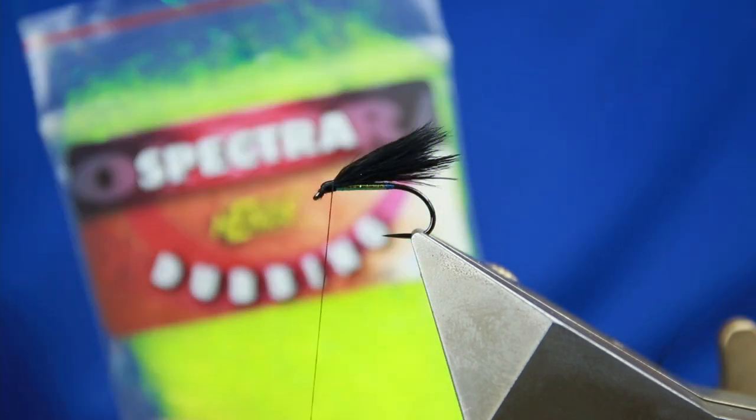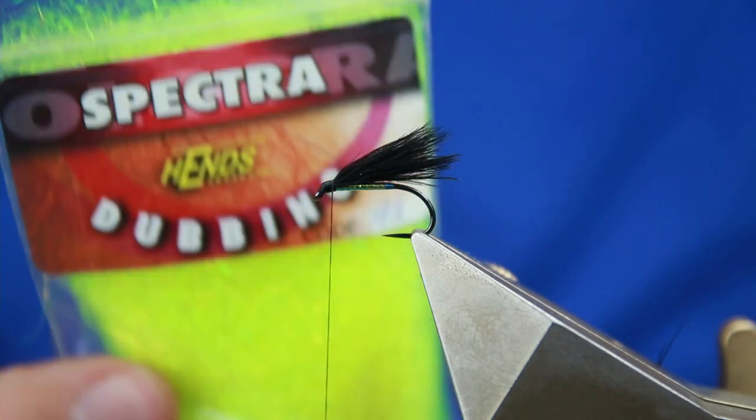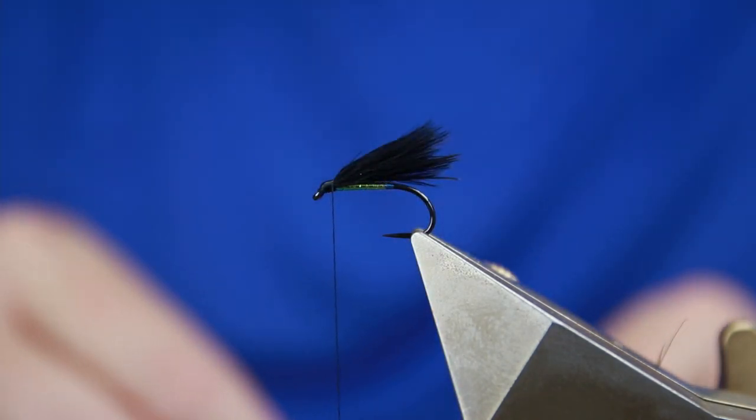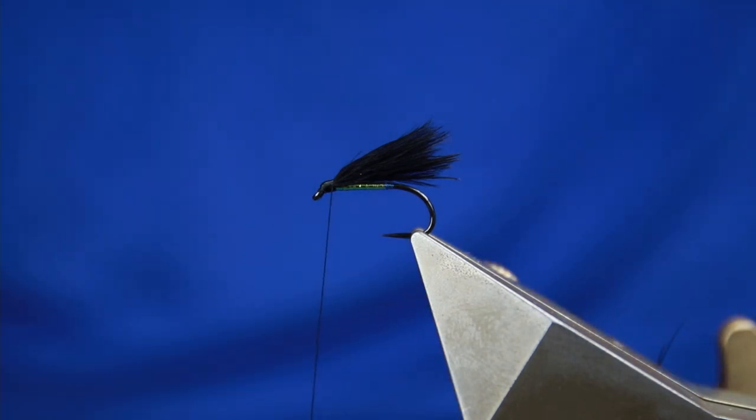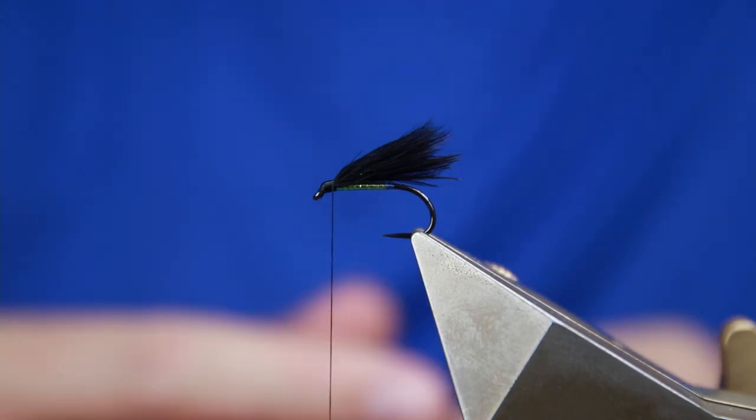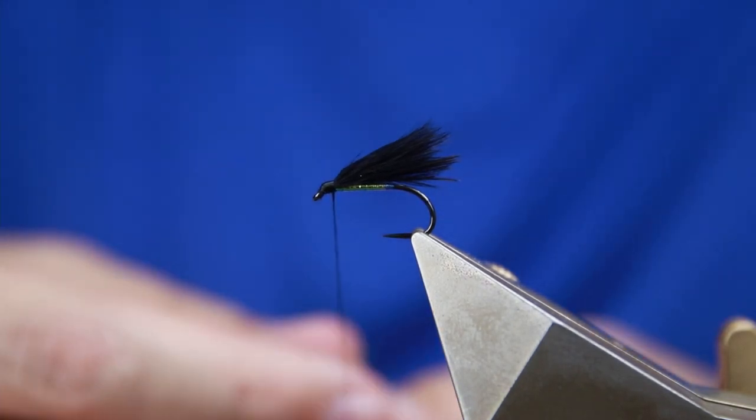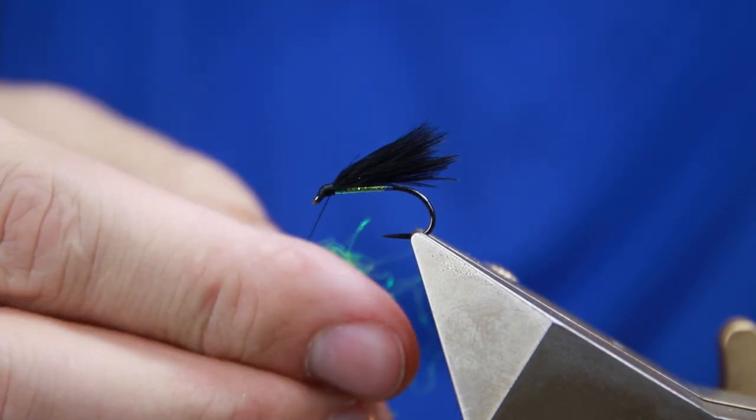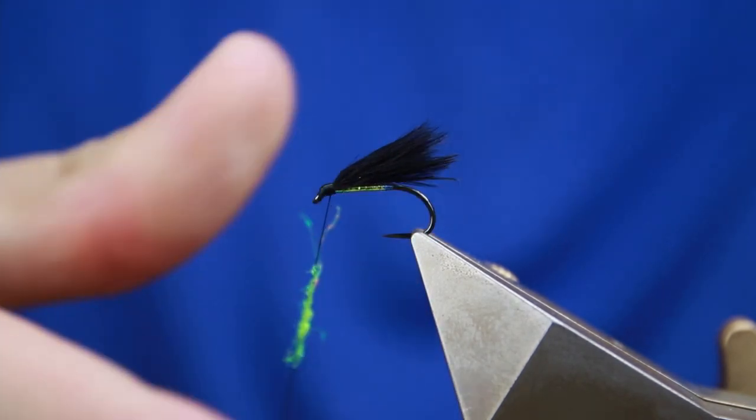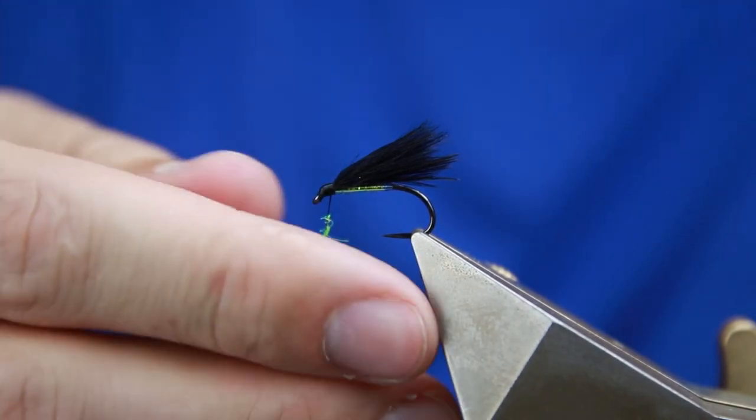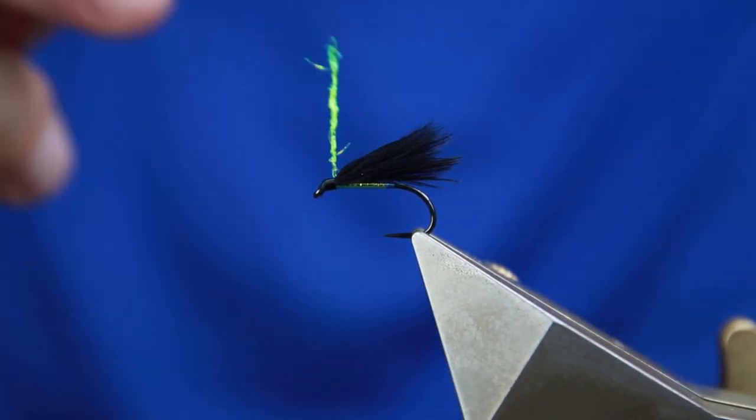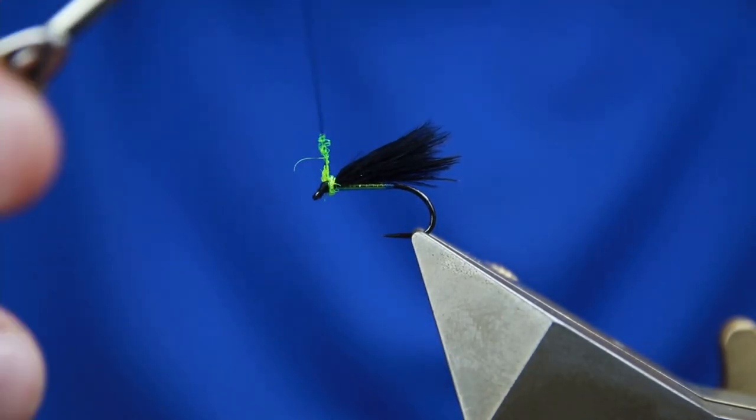And then for the thorax I'm using some hens spectra 93. It's basically like a chartreuse or a yellow—very, very bright. So if you fish Elodie, this is a fly for Elodie if anything. It's really successful down there and not many people know that or fish it. So just come in, wrap that around nice and neat.